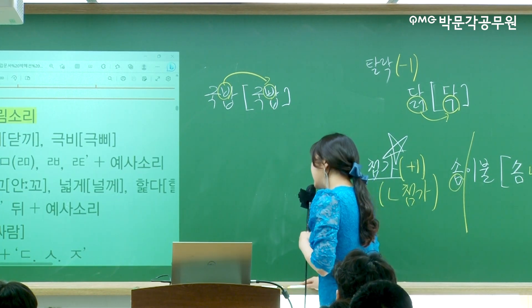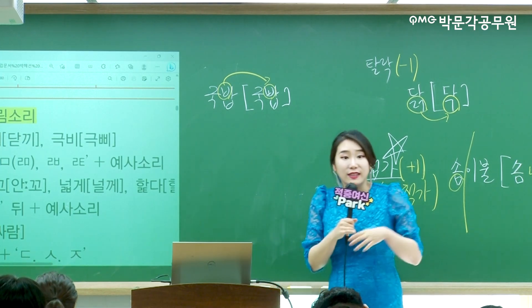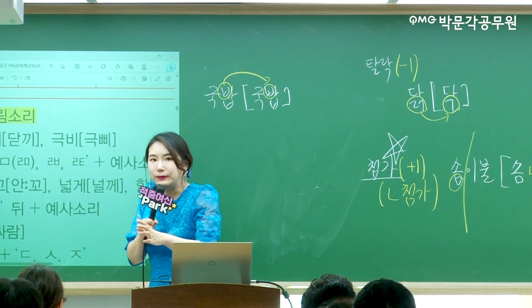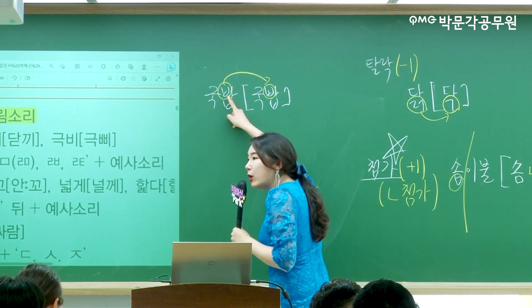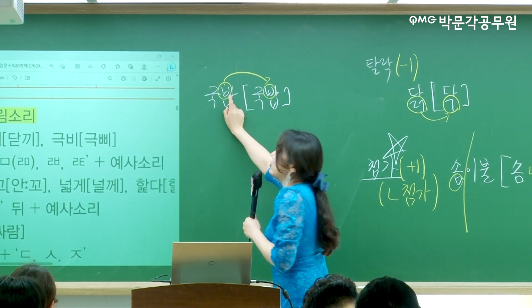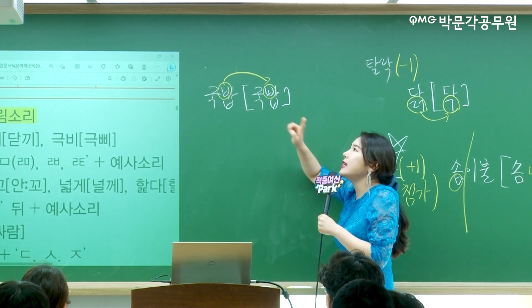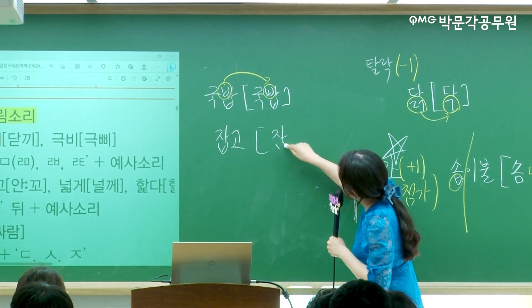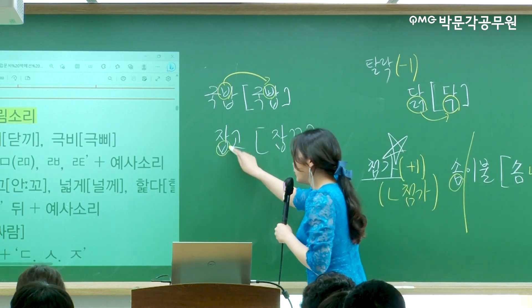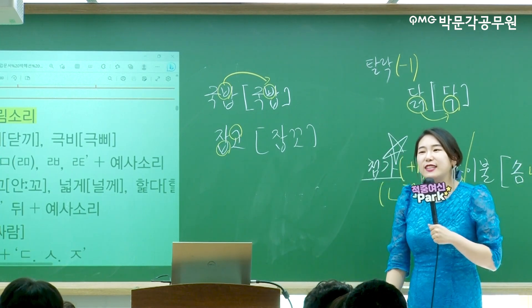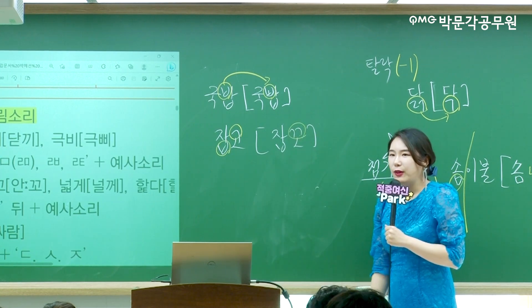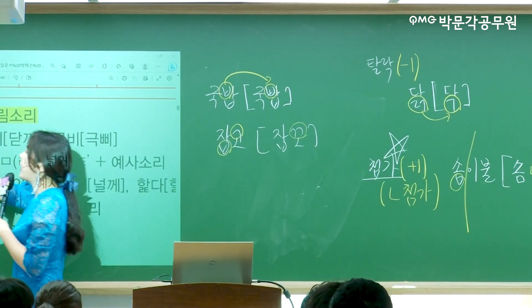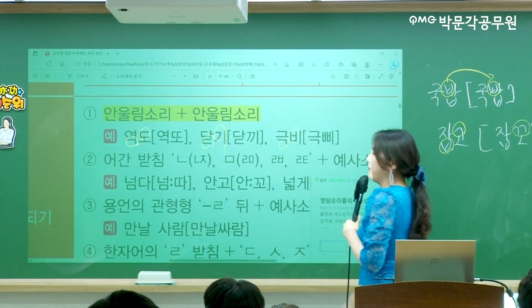안울림소리가 안울림소리 앞에 오는 경우, 센 애들끼리 붙기 때문에 뒤가 세게 발음이 돼요. 예외가 없습니다. 된소리되기는 무조건 1대1 교체예요. 이거 안울림·안울림 연속이면 전부 다 된소리되기가 일어납니다.